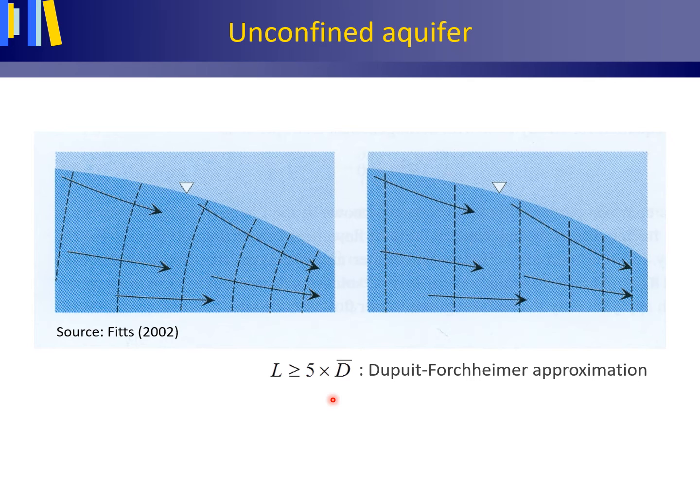The Darcy equation would then read as follows. Q', thus in square meters per day, equals minus K times the average saturated aquifer thickness or depth D̄ times the hydraulic gradient i or dH/dx.